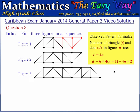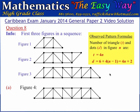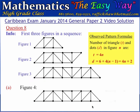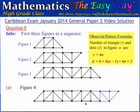Now that we have made these observations, we can proceed to answering the questions. The first part wants us to draw figure 4. To draw figure 4, it's a simple matter of adding one additional trapezium to figure number 3. We start with figure number 3 and add one more trapezium consisting of 4 triangles and 4 dots, with parallel sides 3 units long and 1 unit long. We add this new trapezium to figure number 3 to form figure number 4.